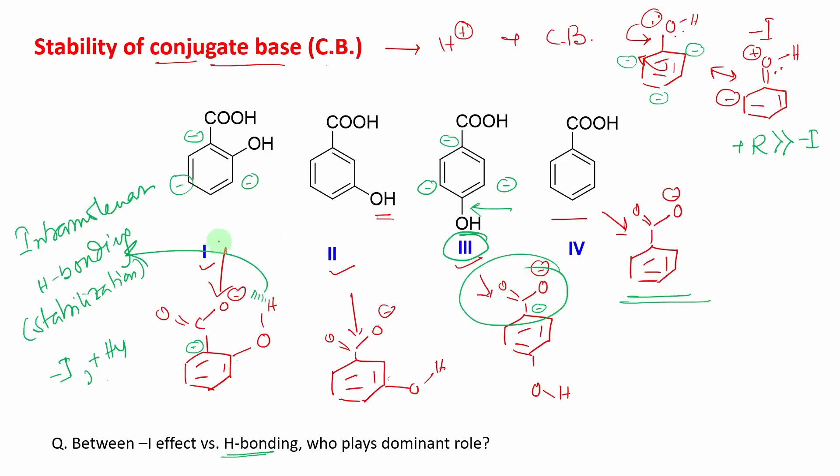So first, who is maximum stabilized or maximum acidic? Obviously option I, salicylic acid. Second, now if you say who is minimum stabilized? Logic will be option III, para-hydroxy benzoic acid. Now what about this meta isomer? In this case, remember students, the conjugate base O⁻ and this proton distance is very high, consequently hydrogen bond is not possible.